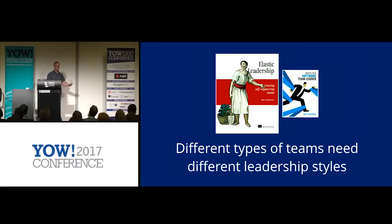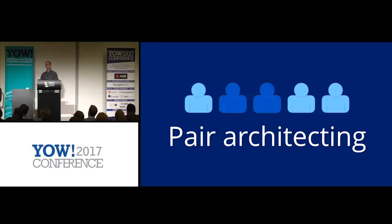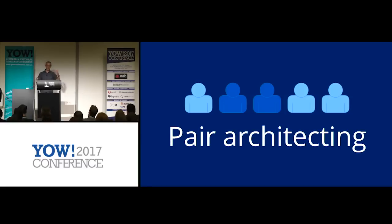A simple piece of concrete advice is just do pair architecting. We always talk about doing pair programming but never really talk about the other upfront stuff. And this doesn't need to be two architects — it could be an architect and the most junior developer you have, because two heads are better than one. So that's a really good starting point.